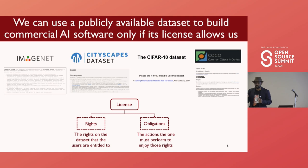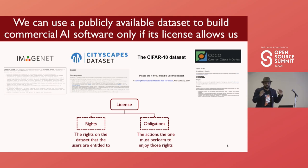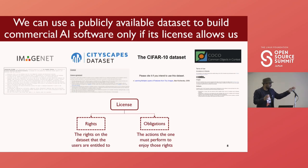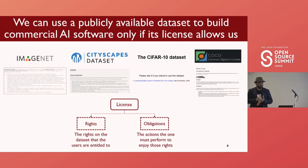Similar to open source software, all of this data comes with licenses. Some common datasets — like ImageNet and Cityscapes — all have licenses. They may look different and be in non-standard formats, but they all have licenses, and each license has rights and obligations associated with it. Rights are what one is allowed to do with the dataset; obligations are what you have to do to continue to enjoy those rights.